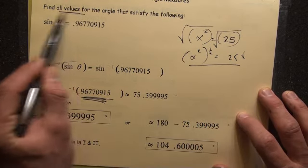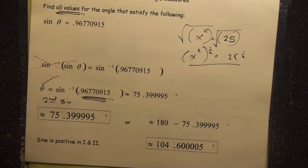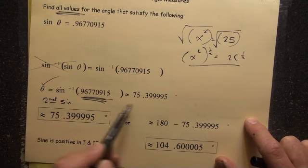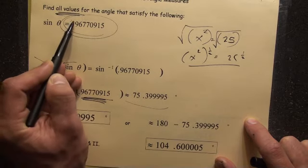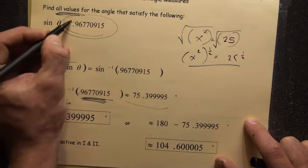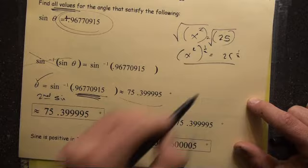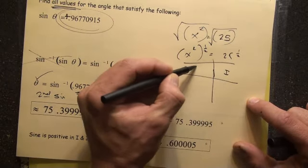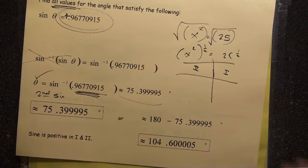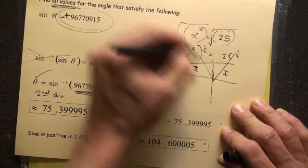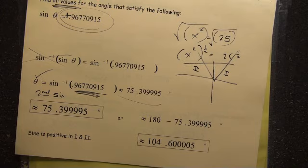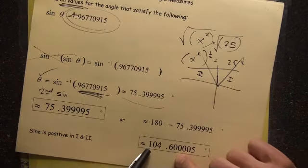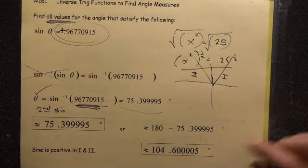Now, the deal is it's possible to get more than one correct answer. Where will sine be positive? Well, what is sine? It's the y value. So you're dealing with quadrant one and quadrant two. So it's either 75 degrees this way or 75 degrees that way. You could subtract 75 from 180 to get 104.600005.